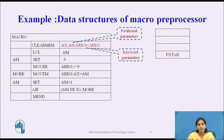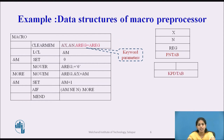The first table we build is the PN tab (Parameter Name Table). Here we specify the parameter names. There are three parameters: X, N, and REGISTER. We enter them into the PN tab in order: first X, then N, then REGISTER.